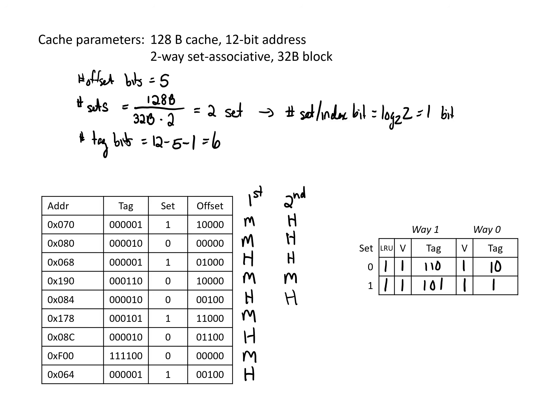The next access looks at set 1 for tag 1,0,1, which is in our cache, so this is a hit, and we update our least recently used to be 0. The following access looks at set 0 for tag 1,0 — that's in our cache, so it's a hit, and our LRU bit is already set correctly. The next access in set 0 looks for the long tag — it's not in the cache, so that's a miss. We replace way 1 per LRU, fill in 1,1,1,1,0, and update LRU to point to way 0. Finally, we look at set 1 for tag 1 — that's a hit, and we update LRU to point to way 1.